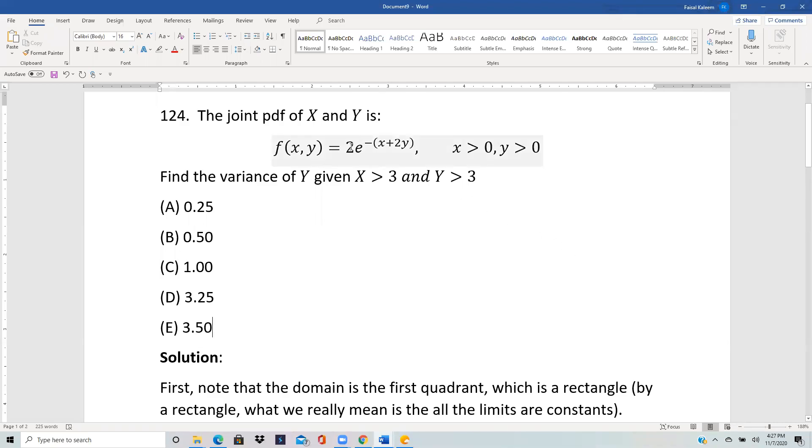The joint pdf of x and y is 2e^(-(x+2y)). Find the variance of y given x is greater than 3 and y is greater than 3.